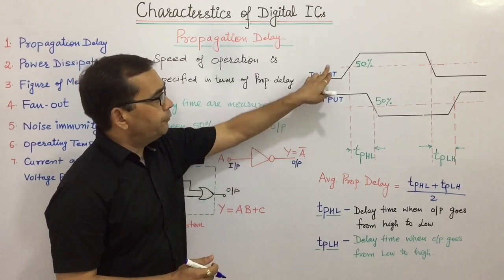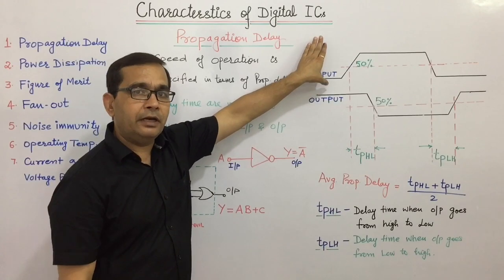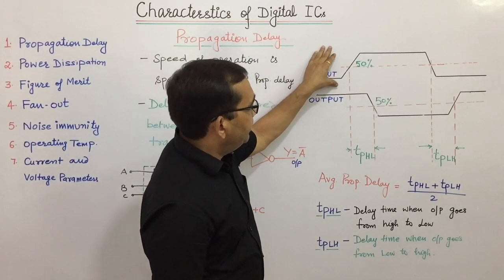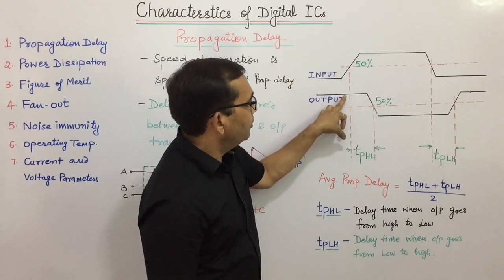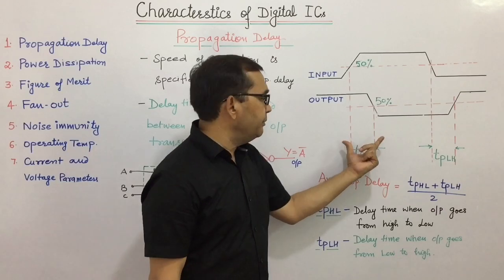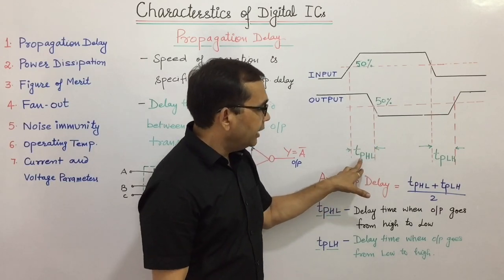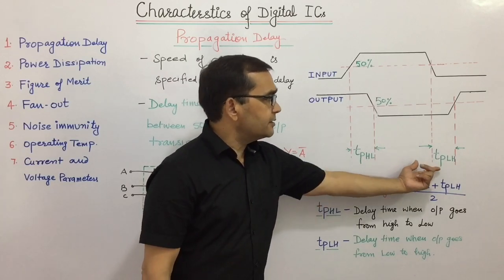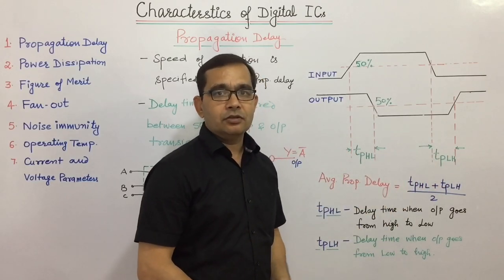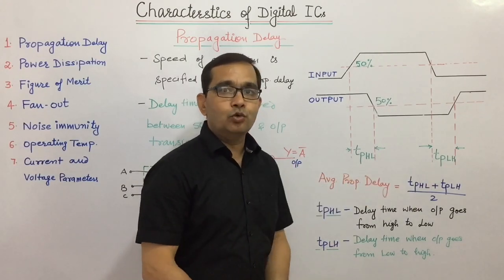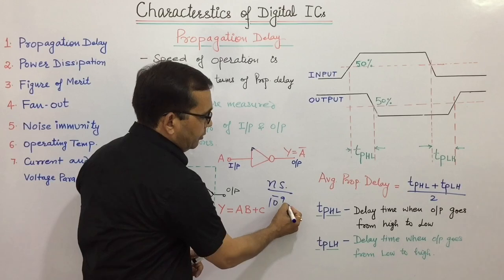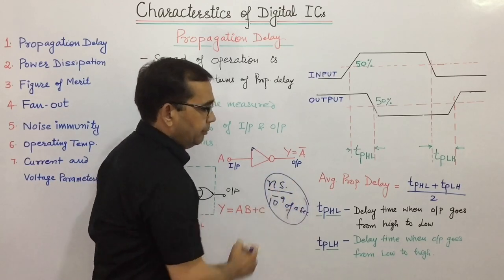Propagation delay is generally measured between 50% of the transition of the input and output. This is the input signal applied to a gate, and this is the output of an inverter or NOT gate. When we apply the input, we won't get the output instantly — it takes certain time for the output to go from high to low. This delay time is represented by TPHL, meaning the time period when output goes from high to low. Another delay time, where the output signal goes from low to high, is represented by TPLH. The average propagation delay is the average of these two delay times, and it is always measured in nanoseconds — that is 10 to the power of minus 9 seconds.